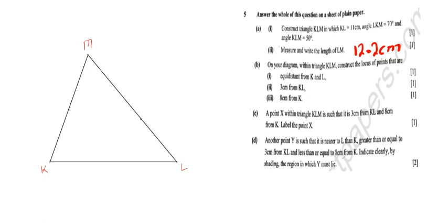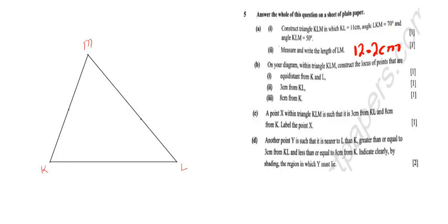We have now answered parts A1 and A2, guaranteeing us two marks. Each sub-part carries one mark. It's very important to do the best you can to get all the marks, because if you lose precision, they may deduct even half a mark — and 0.5 marks is significant. Try to keep as many marks as possible.